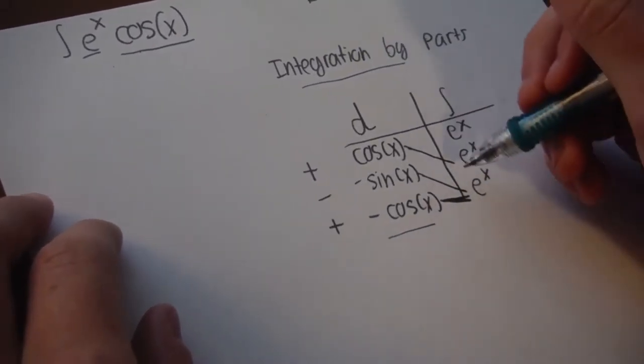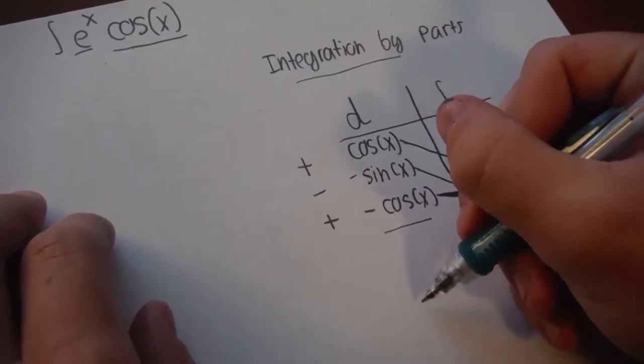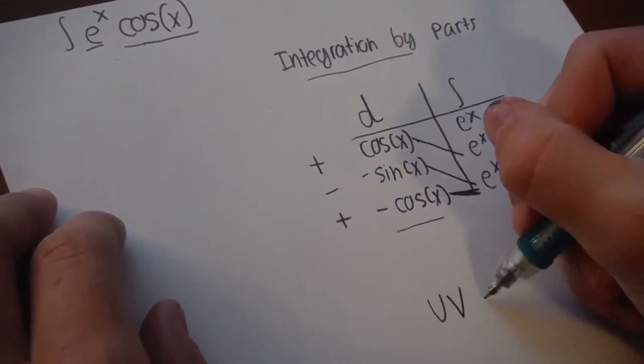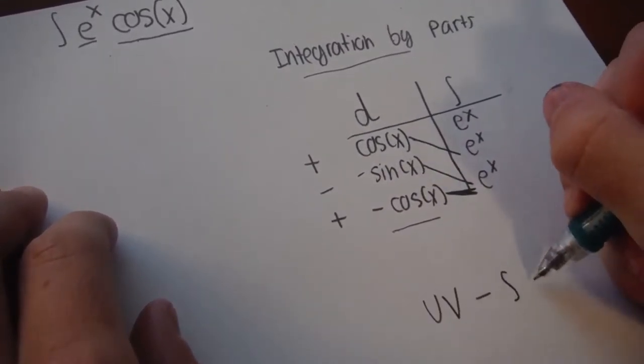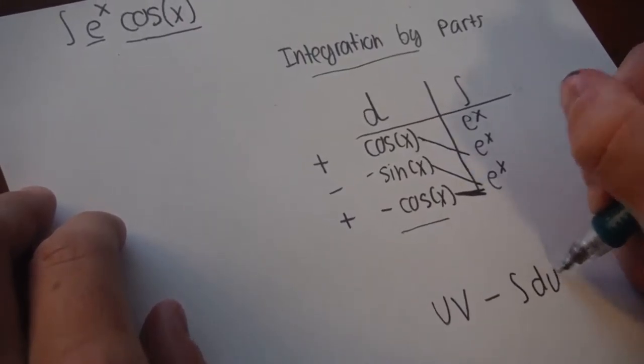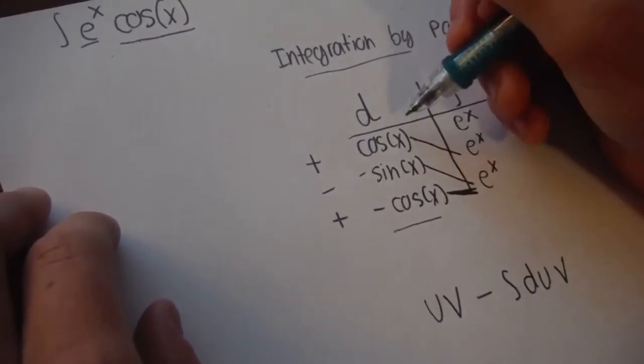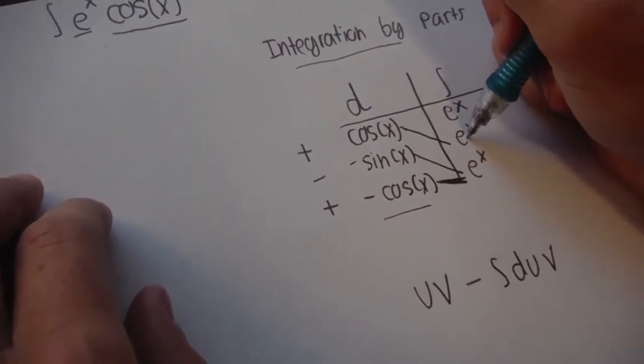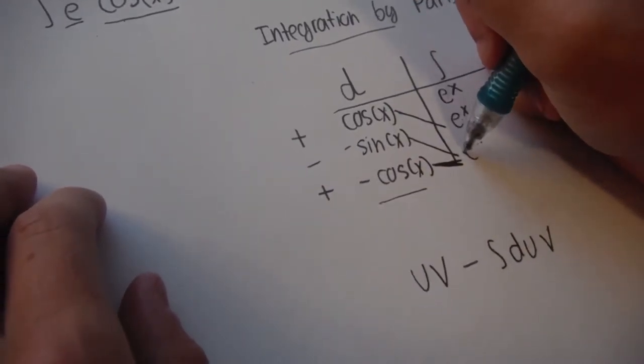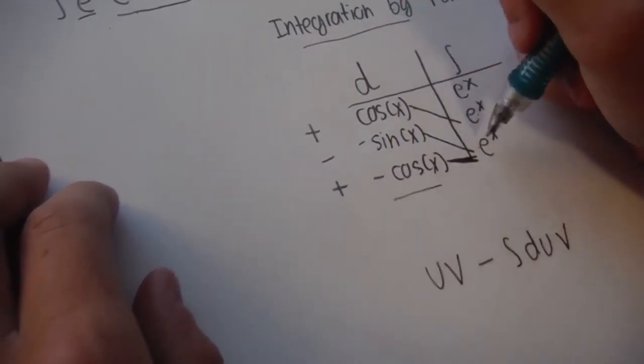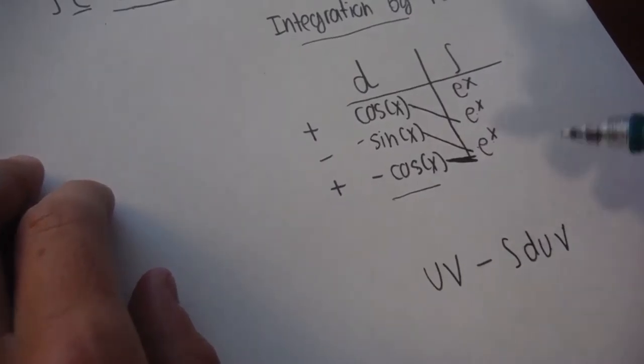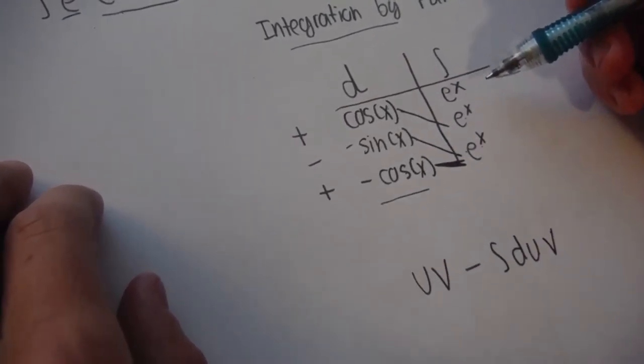So, because what we're really doing here is u times v, minus the integral of du times v. So this is u, this is v, and then this is u and v again, and this is du and v. Make sense? So we're just doing this, but in a table format.